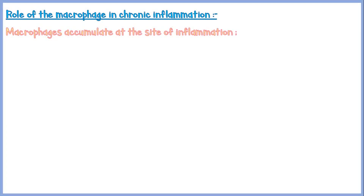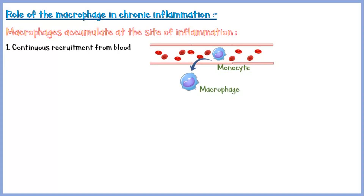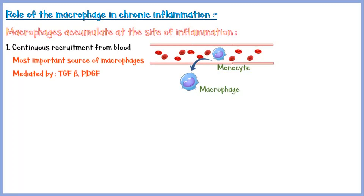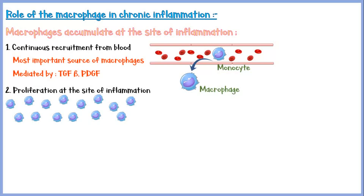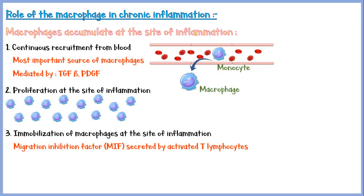Now let's see the role of macrophages in chronic inflammation. During chronic inflammation, macrophages accumulate at the site by the following mechanisms: continuous recruitment from the blood to the site of inflammation — macrophages are derived from blood monocytes, and when a monocyte migrates from the blood into a tissue, it is called a tissue macrophage. This is the most important source, mediated by transforming growth factor beta and platelet-derived growth factor. The second mechanism is proliferation of macrophages at the site of inflammation. The third is immobilization of macrophages at the site to prevent them from migrating elsewhere, mediated by migration inhibition factor secreted by activated T lymphocytes.